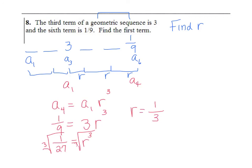Check: 3 times 1/3 is 1, times 1/3 is 1/3, times 1/3 is 1/9 — that works. Now working backwards from position 3: dividing by 1/3 (i.e., multiplying by 3): position 2 is 9, position 1 is 27. So a sub 1 equals 27.